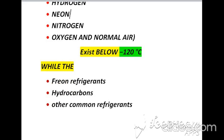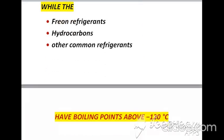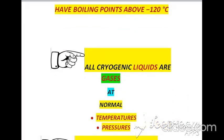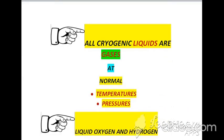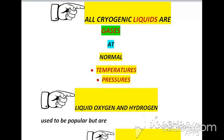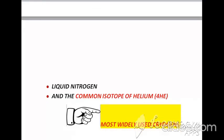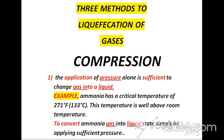Freon refrigerants, hydrocarbons, and other common refrigerants used in different equipment for refrigeration have boiling points above negative 120°C. Remember, all cryogenic liquids are gases at normal temperature and pressure. Liquid oxygen and hydrogen used to be popular but are rarely used nowadays due to potential hazards, so liquid nitrogen and the common isotopes of helium are most widely used for cryogenic purposes.